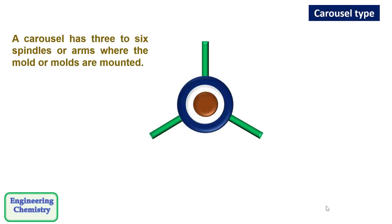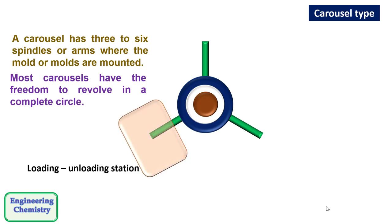The most common type is carousel type. A carousel has three to six spindles or arms where the mold or molds are mounted. Most carousels have the freedom to revolve in a complete circle. It consists of loading and unloading station where molds are loaded.